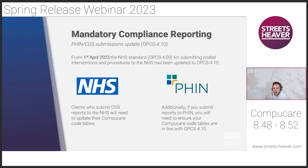Finally, before we move into our live demos, we have an important update around FIM reporting and CDS submissions. From April 1st, the NHS implemented an updated version of the OPCS classification, moving from OPCS 4.09 to OPCS 4.10. Any data submitted relating to patients discharged after April 1st needs to be coded in the latest 4.10 version. Anything relating to patients discharged prior to April 1st should be in 4.09. Clients who submit CDS reports to the NHS will need to update their CompuCare code tables, and those submitting FIM reports will also need to ensure code tables are in line with OPCS 4.10. Our support team are available to assist.